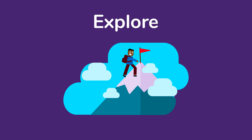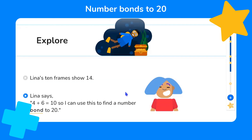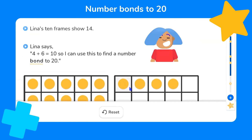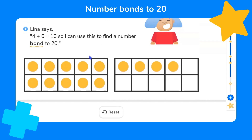Now let's explore another bond to 20 using what we've just practiced. Lena's 10-frames show 14. Lena says: four plus six equals 10, so I can use this to find a number bond to 20. Well done if you can already spot how four plus six will help us. We can use the 10-frames to explore what will bond with 14 to make 20. So 14 is 10 and four more.